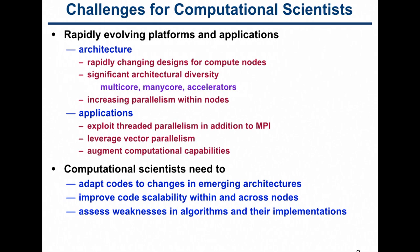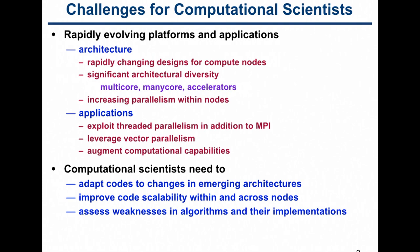For computational scientists like yourselves, one of the biggest challenges is that these platforms are rapidly evolving. There's been a shift from multi-core to many-core, and a big push to move to systems with accelerators. The machines you're starting to compute on will not be the ones you finish computing on. There's also increasing parallelism within nodes, so as application developers you need to exploit threaded parallelism in addition to MPI, and leverage vector parallelism to get the most out of arithmetic units.